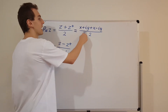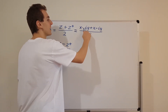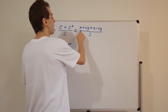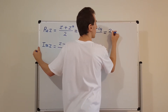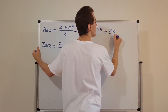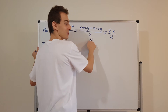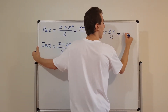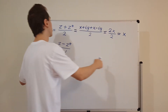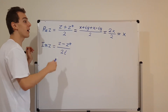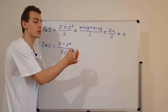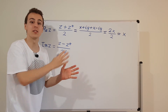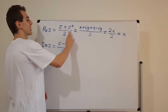We're dividing by 2. The iy and minus iy cancel out, eliminating all imaginary components. We're left with x plus x, which gives 2x, and dividing by 2 gives us x. And x is the real component of z — the horizontal component when we represent z on the complex plane. So we've verified that this works.